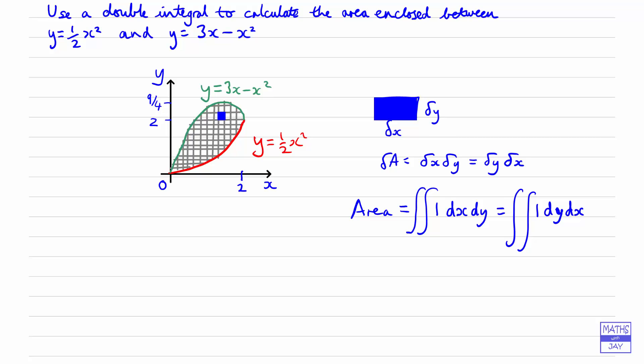The actual integrand when we're finding an area is just one. The difficult bit is to work out what the limits on those two integrals are. We're going to have a look at how we can first do this in the easiest way possible in this video, and then in the next video we'll look at doing it the more difficult way, the other way round.